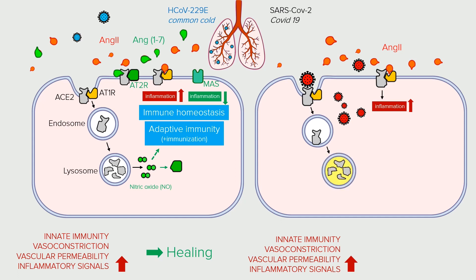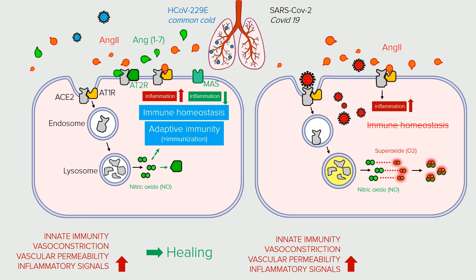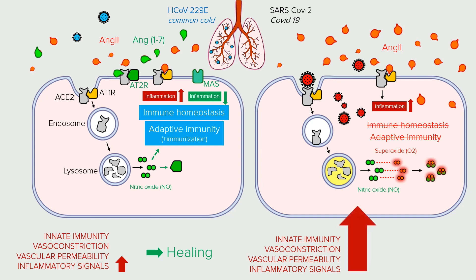But there is another difference with a dire consequence. The NO, instead of activating anti-inflammatory mechanisms, reacts with superoxide that the cell produces as part of its stress response. As a result, the cell fails to reach immune homeostasis, and there is no priming of adaptive immunity. ANG2 activity increases unrestrained. Severe COVID-19 infections can be seen as angiotensin-2 poisoning.